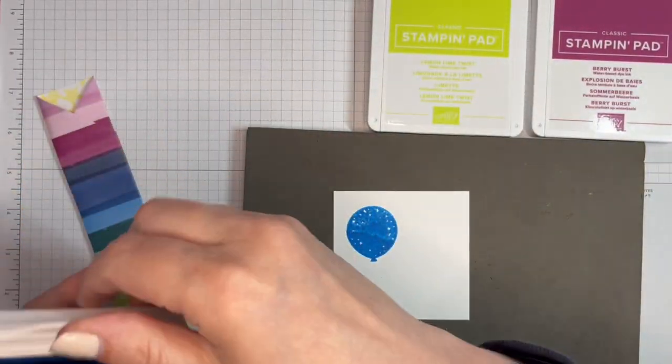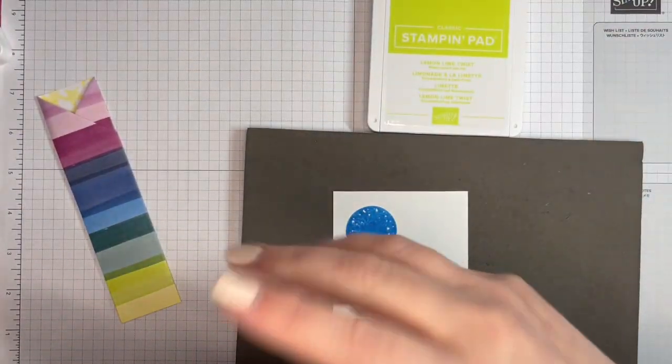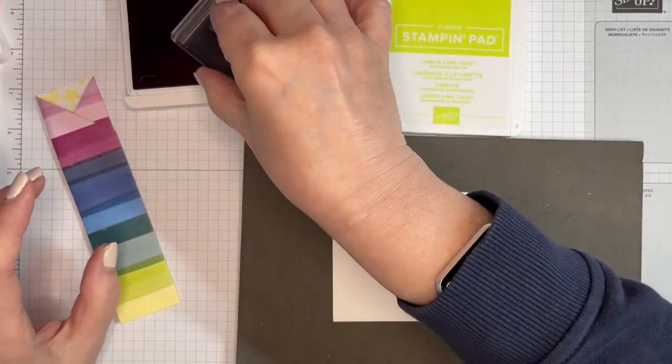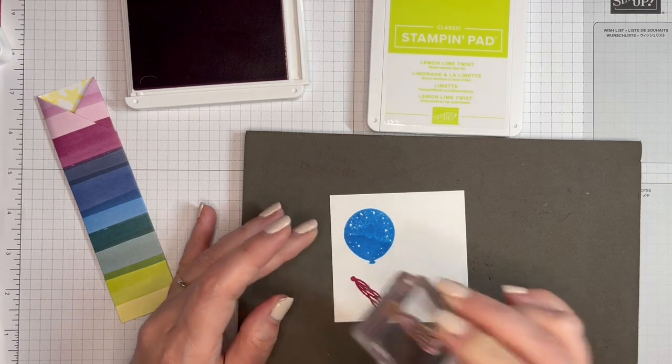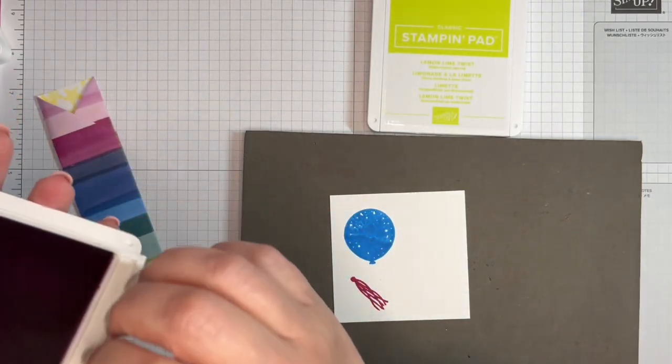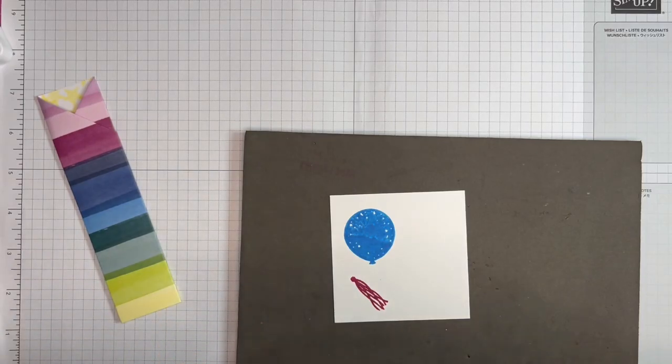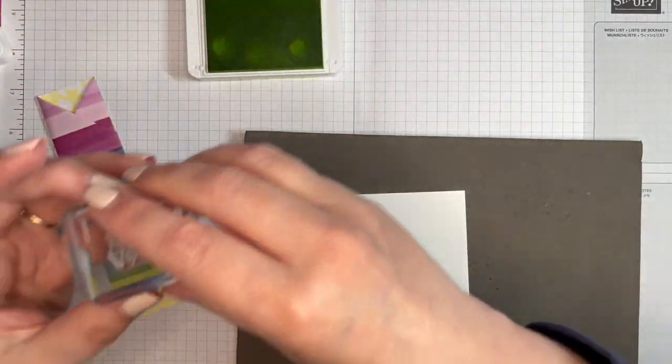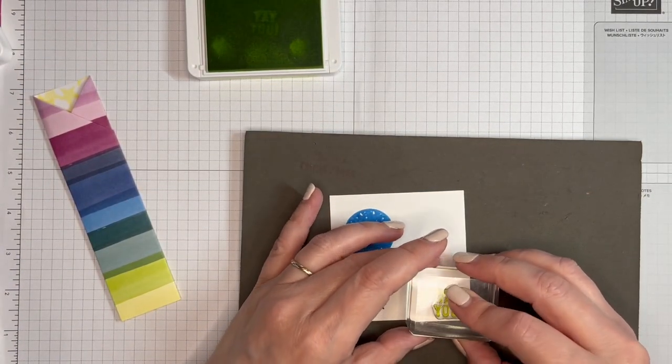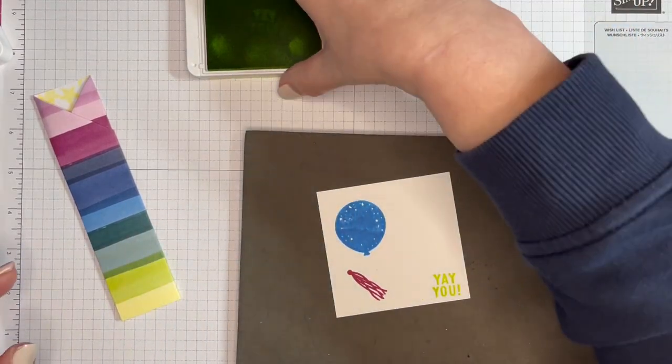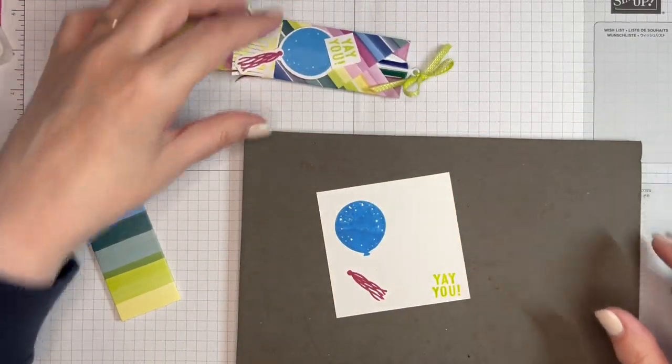Then I've got Berry Burst for the tail streamers, whatever you want to call it, like that. And finally, I'm going to stamp Yay You with Lemon Lime Twist. I'm just going to do that in the corner because I'm just going to cut that.